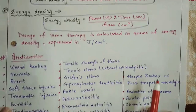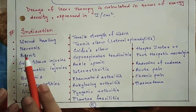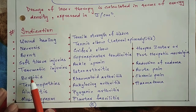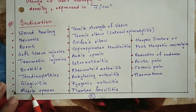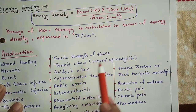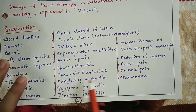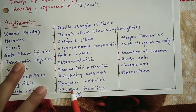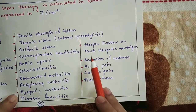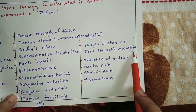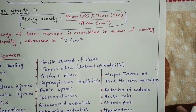The dose of laser therapy is calculated in terms of energy density, expressed in joules per cm². Indications include: wound healing, necrosis, burns, soft tissue injuries, traumatic injuries, bursitis, tendinopathies, gingivitis, muscle spasms, tensile strength of tissue, tennis elbow, golfer's elbow, supraspinitis, tendinitis, ankle strain, osteoarthritis, rheumatoid arthritis, ankylosing arthritis, pyogenic arthritis, plantar fasciitis, herpes zoster, post-herpetic neuralgia, reduction of oedema, acute pain, chronic pain, and hematoma.